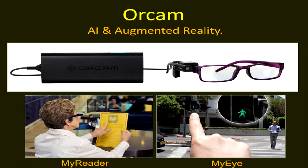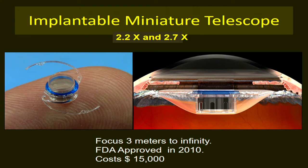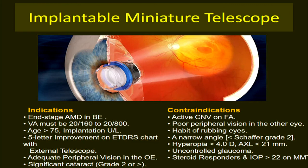OrCam, developed by an Israeli company, allows the user to point a finger at text; the camera reads, magnifies, and reads it aloud. It is available for both distance and near viewing. The implantable miniature telescope (IMT) provides 2.2x to 2.7x magnification, has been in existence for 20 to 25 years, and received FDA approval about nine years ago. It is implanted in one eye to produce a magnified retinal image, while the other eye is used for peripheral viewing.